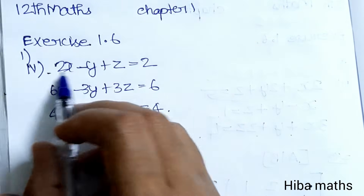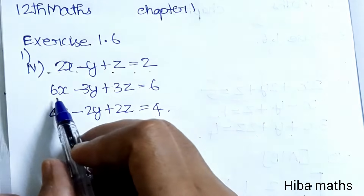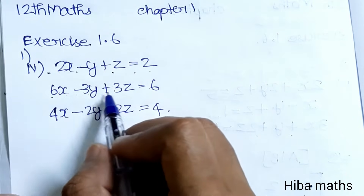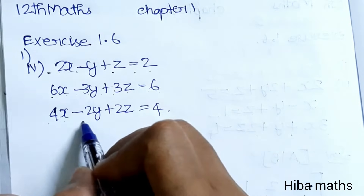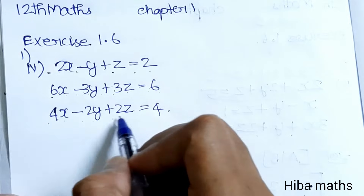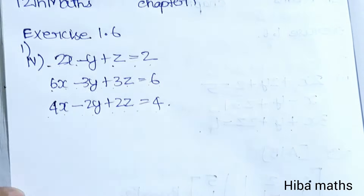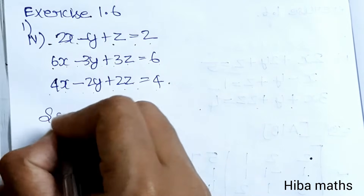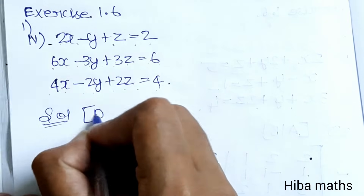The system of equations is: 2x minus y plus z equals 2; 6x minus 3y plus 3z equals 6; 4x minus 2y plus 2z equals 4. We solve using the augmented matrix method.